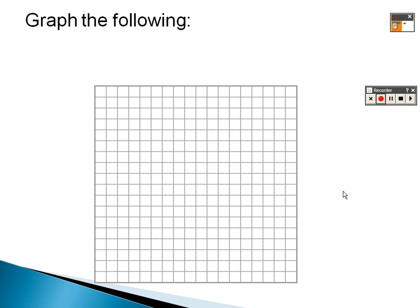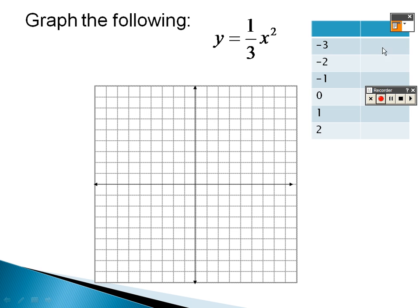The next graph uses a table of x's and y's. Plugging in negative 3: negative 3 squared is 9, divided by 3 is 3. Plugging in negative 2: negative 2 squared is 4, divided by 3 is approximately 1.333. Plugging in negative 1: negative 1 squared is 1, times one-third is one-third.